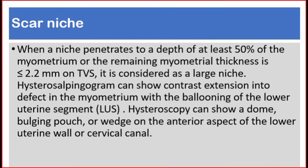When a niche penetrates to a depth of at least 50% of the myometrium, or the remaining myometrial thickness is below 2.2 mm on transvaginal ultrasound, it is considered a large niche. Hysterosalpingogram can show contrast extension into a defect in the myometrium with ballooning of the lower uterine segment. Hysteroscopy can show a dome, bulging pouch, or wedge on the anterior aspect of the lower uterine wall or cervical canal.